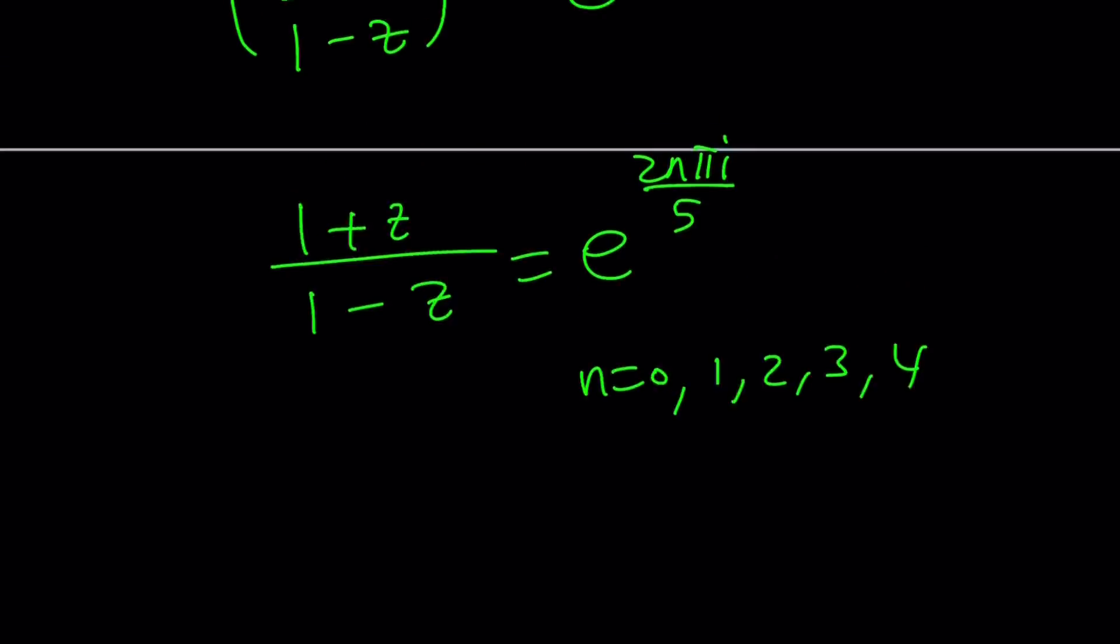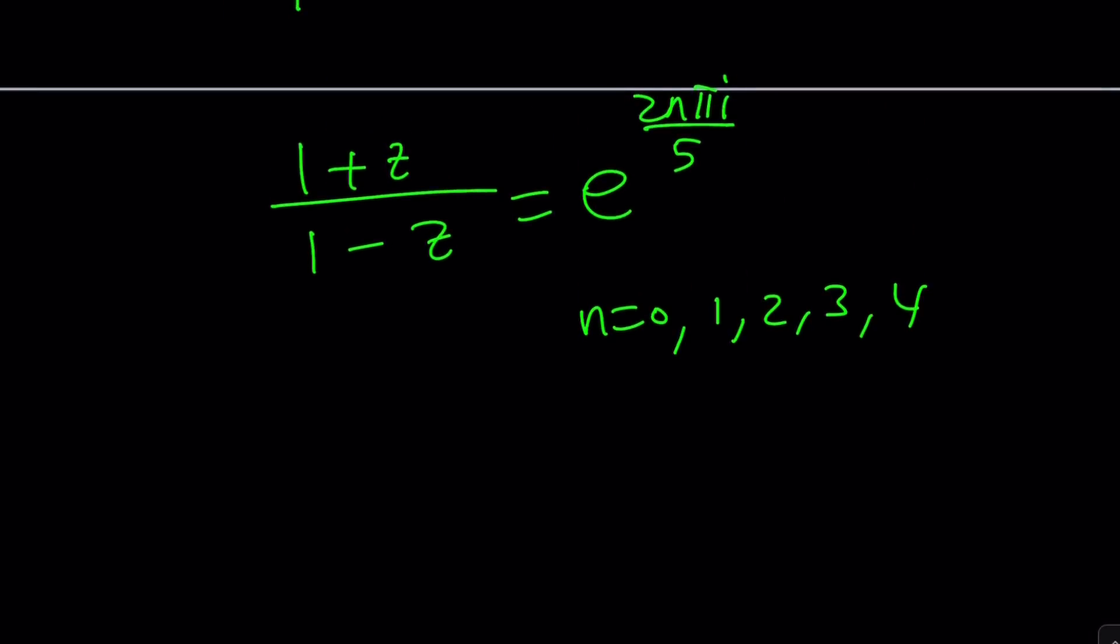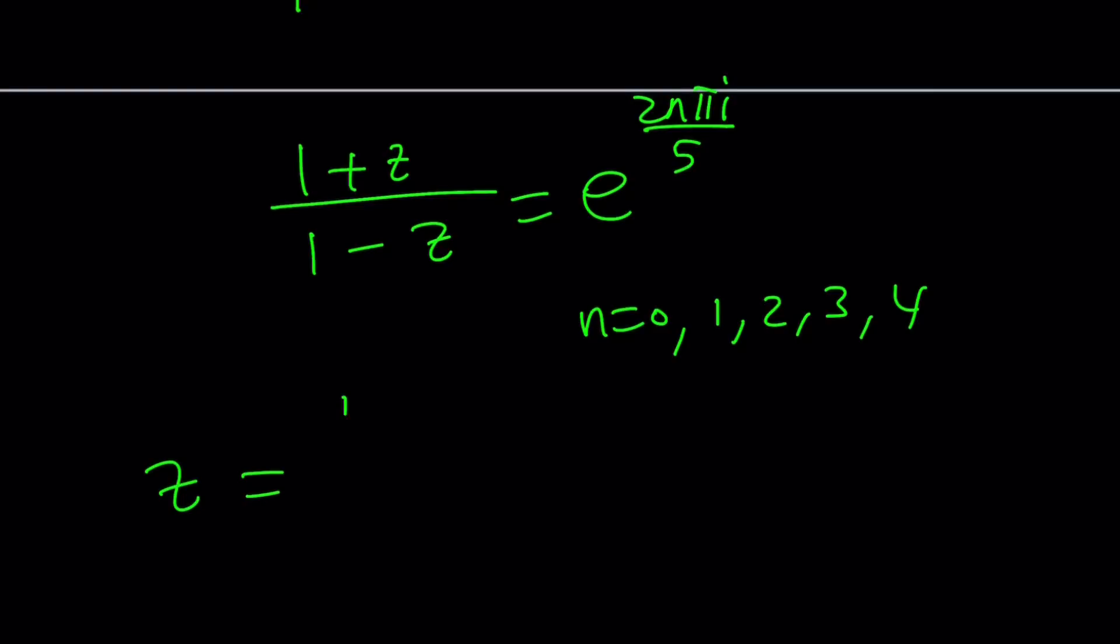If you do a little bit of, what is it called, Hocus Pocus, Componendo, Dividendo, something like that, should give you z as (1 - e^(2nπi/5))/(1 + e^(2nπi/5)). Again, you're going to use the same values, and from here, you're going to get the answer.